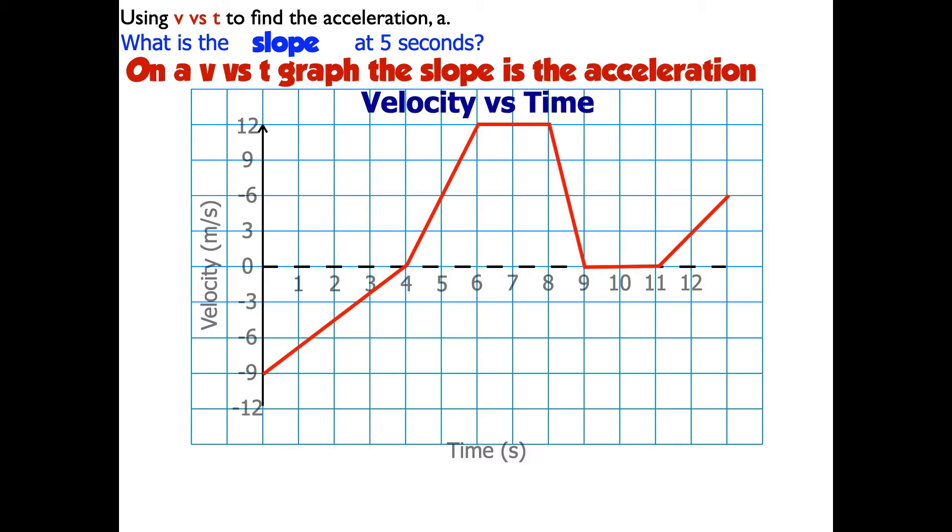So what I'll do in my velocity versus time graph is I'll go over to 5 seconds and then go up to my point on the curve. And then I can see that it's part of a straight line. So I know that the slope everywhere along this straight line is going to be the same. So all I need to do is find the slope of this straight line right here.